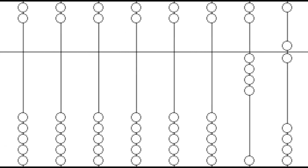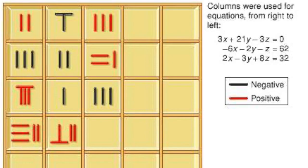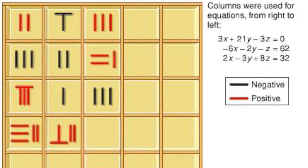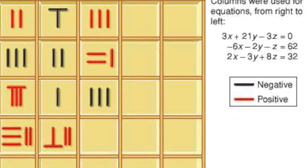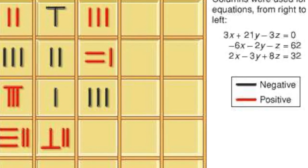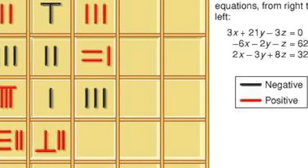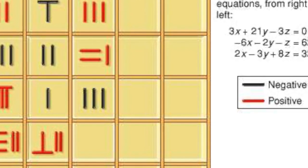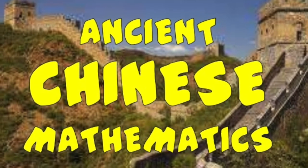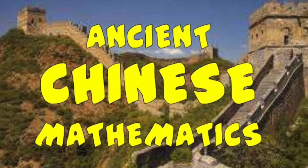A second theory about the symbols comes from the fact that numbers — and in fact all writing in the late Shang period — were only used as part of religious ceremonies. So the numbers in religious settings had special significance. And that's some ancient Chinese mathematics — thanks for watching.